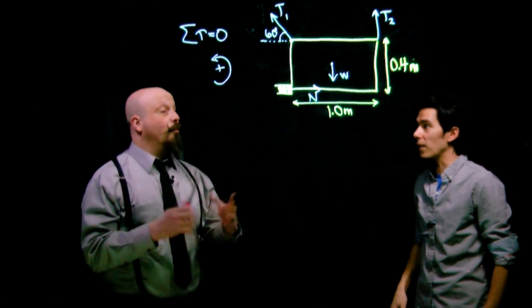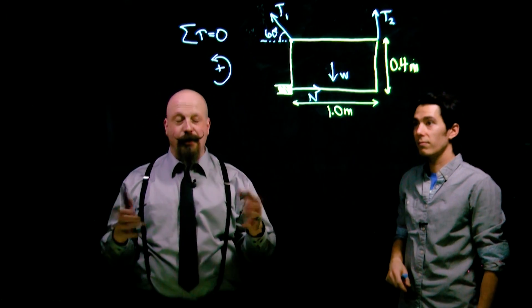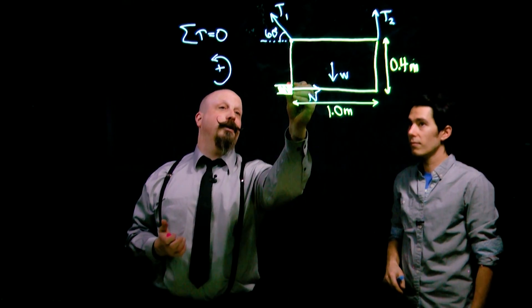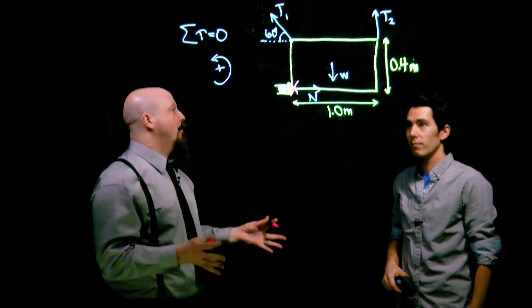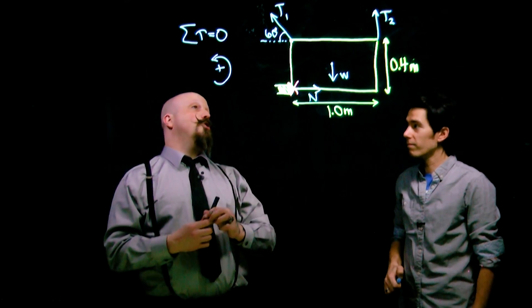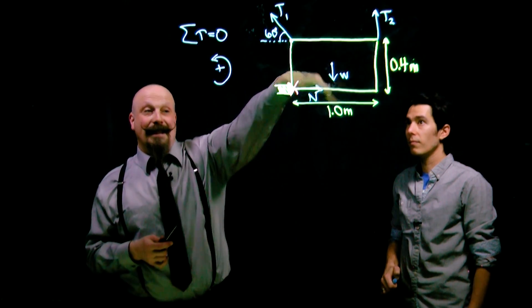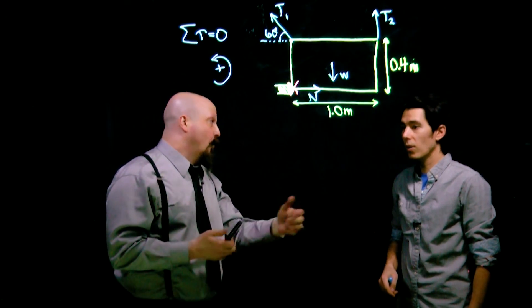The first thing we need to do in order to solve for the torques involved is to pick a pivot point. I'm going to take the pivot point right here where it's in contact with the surface. That means certain forces will try to rotate it this way, and certain forces will try to rotate it that way, giving us positive and negative torques.